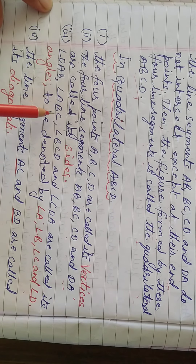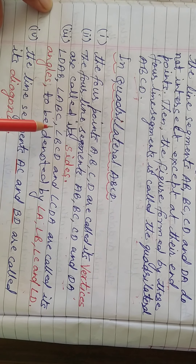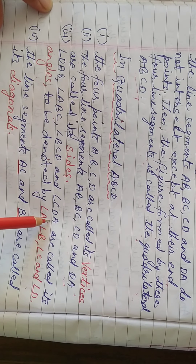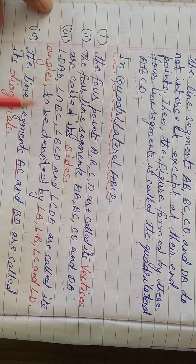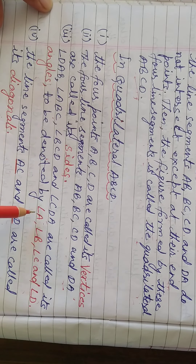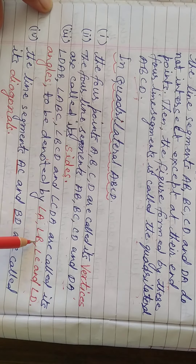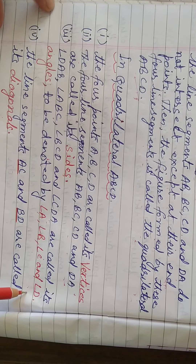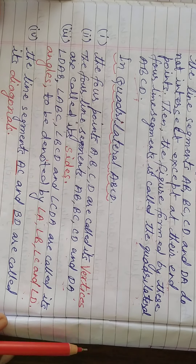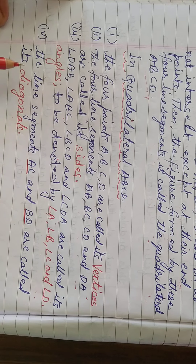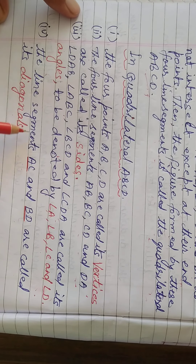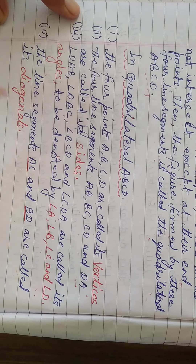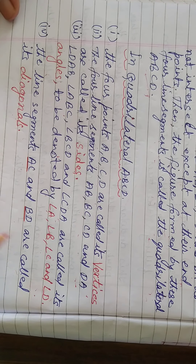Angle DAB, angle ABC, angle BCD, and angle CDA are called its angles, to be denoted by angle A, angle B, angle C, and angle D. The line segments AC and BD are called its diagonals. These are also important things.